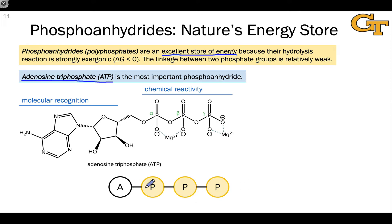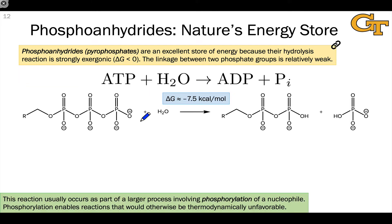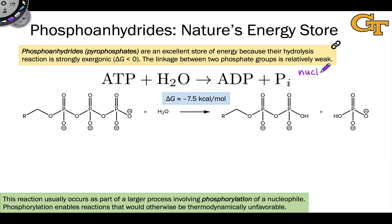Hydrolysis can happen at any of the three bonds shown, but it most commonly occurs at one of two specific bonds — giving either adenosine monophosphate if the diphosphate is kicked off as a leaving group, or adenosine diphosphate if the other bond breaks kicking off a monophosphate leaving group. The hydrolysis of ATP to form ADP and phosphate is very exergonic, enough to power a variety of processes in biochemical systems. From the perspective of fundamental organic chemistry, this reaction is nothing more than nucleophilic substitution.